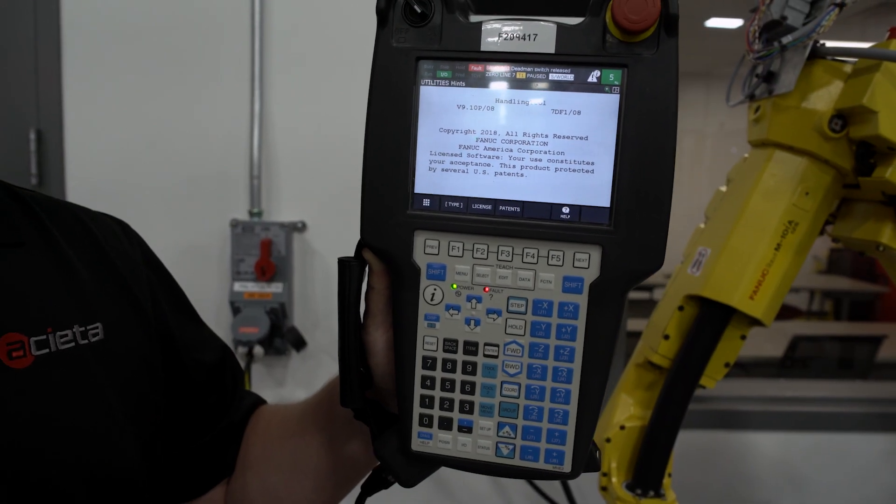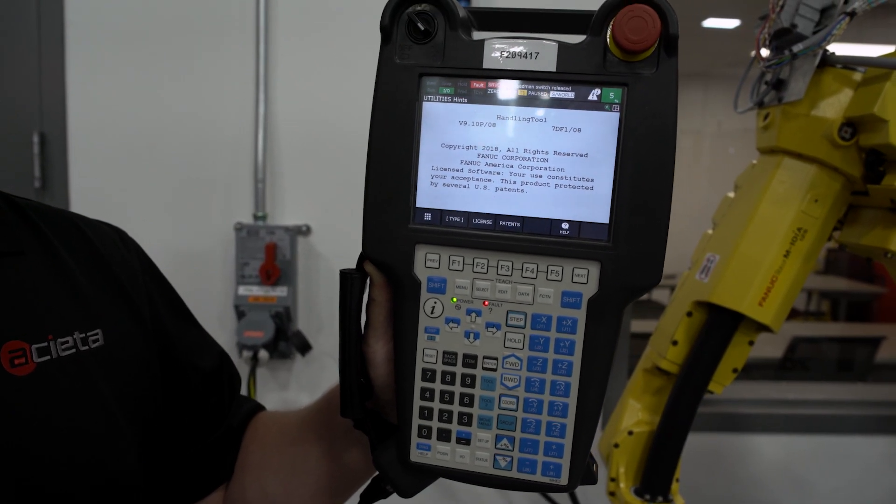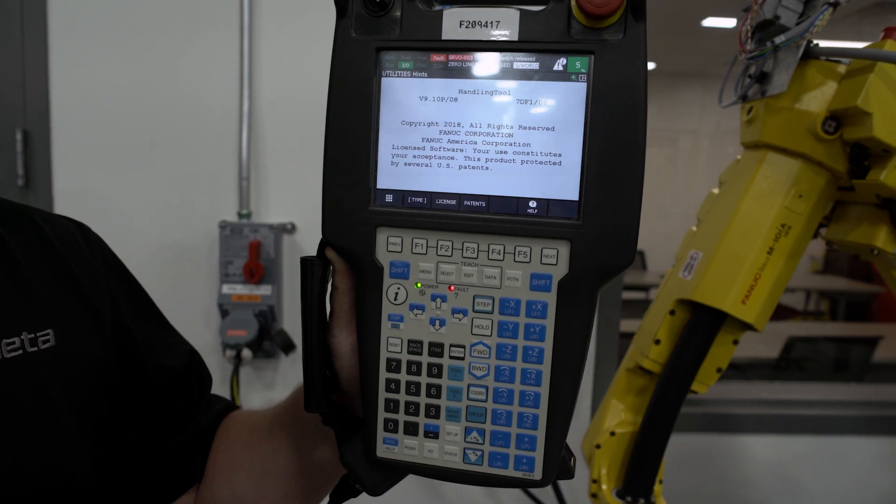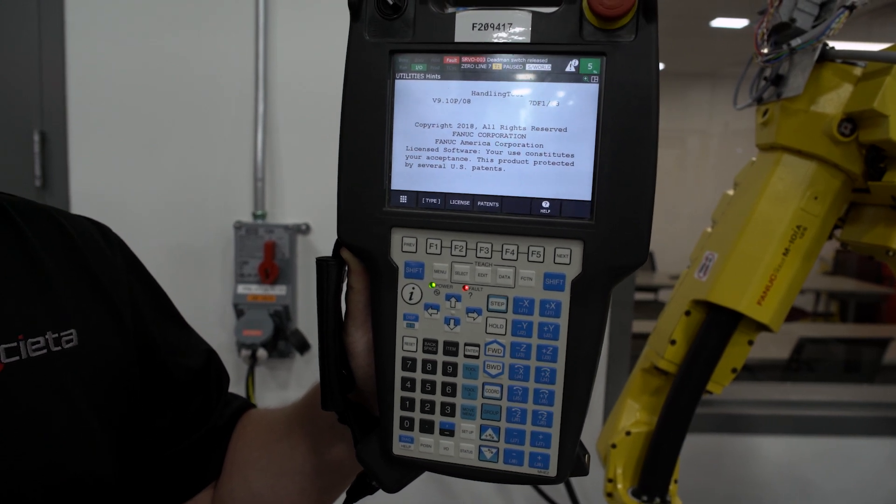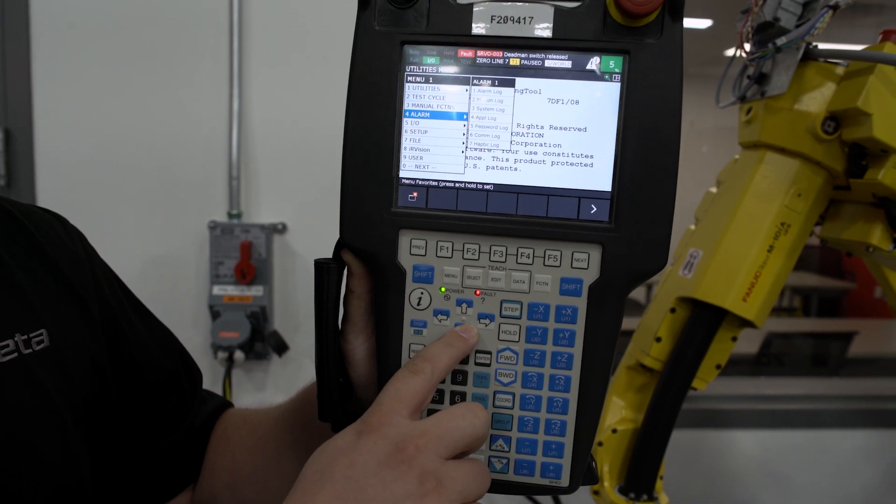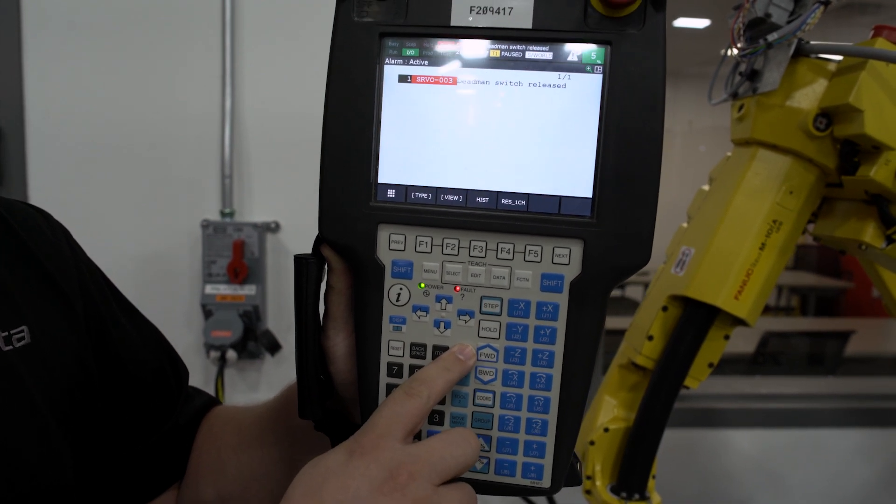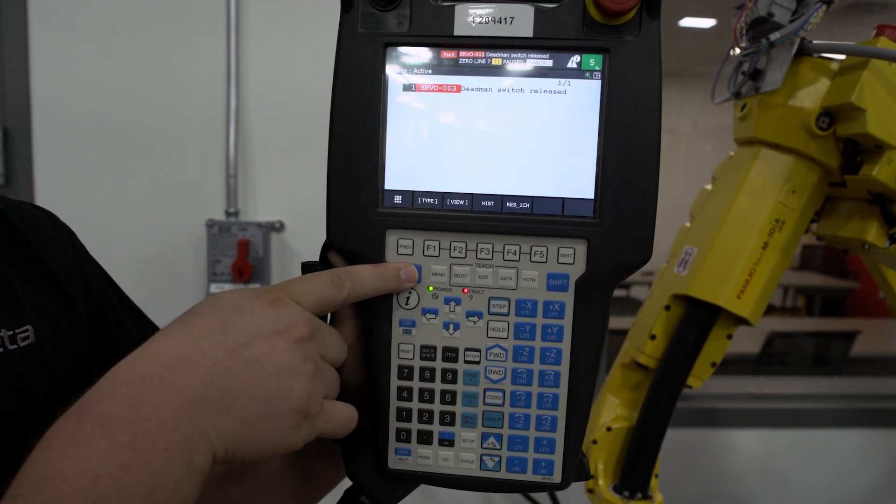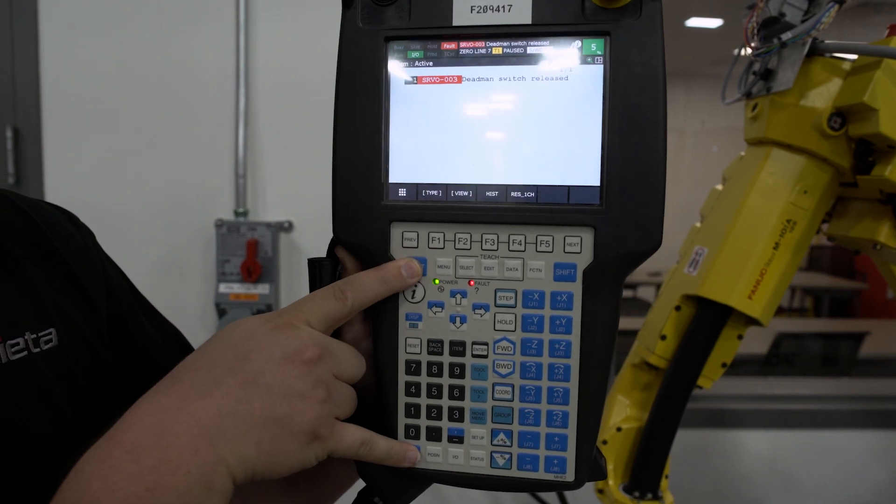For further assistance on the alarm that we have just talked about, we can also navigate to the help and diagnose within the teach pendant by pressing our menu button and going to the active alarm screen, and holding down the shift button and then pressing our diagnose button at the bottom.